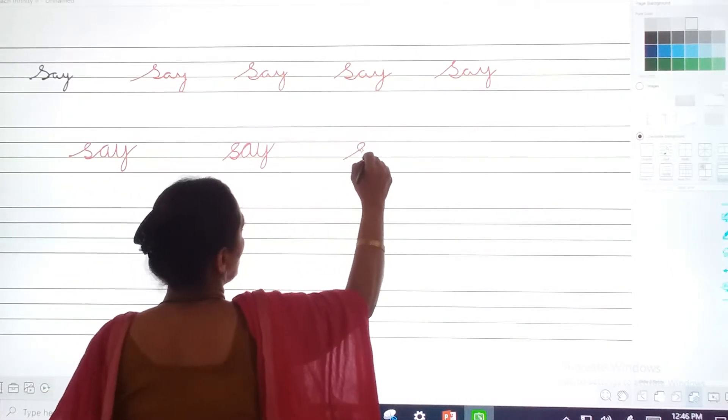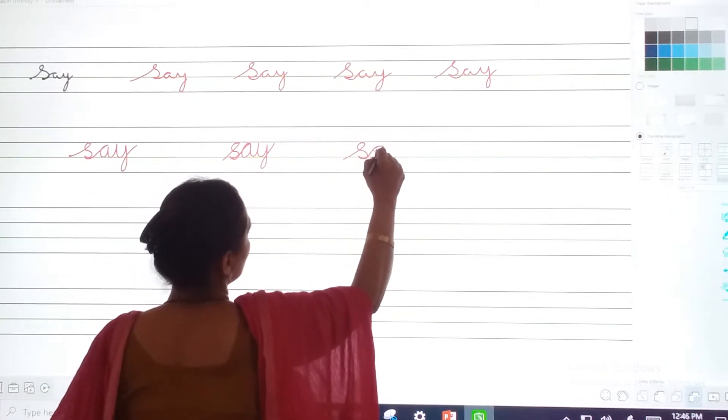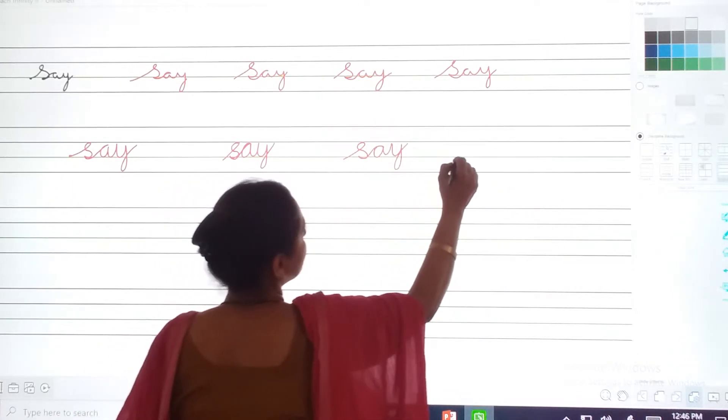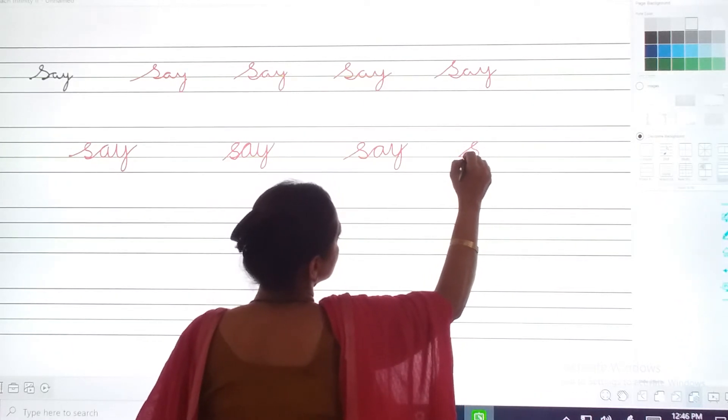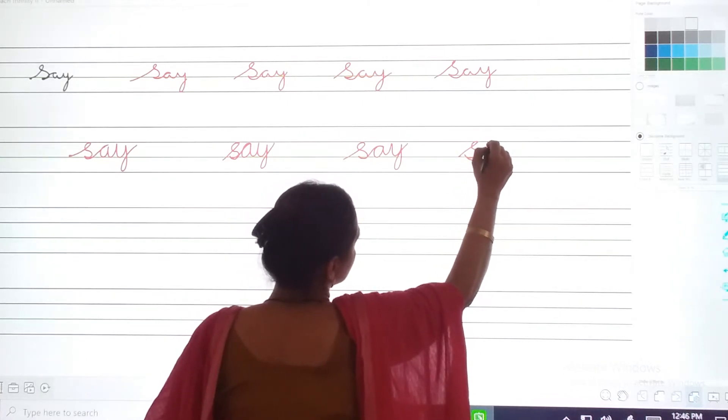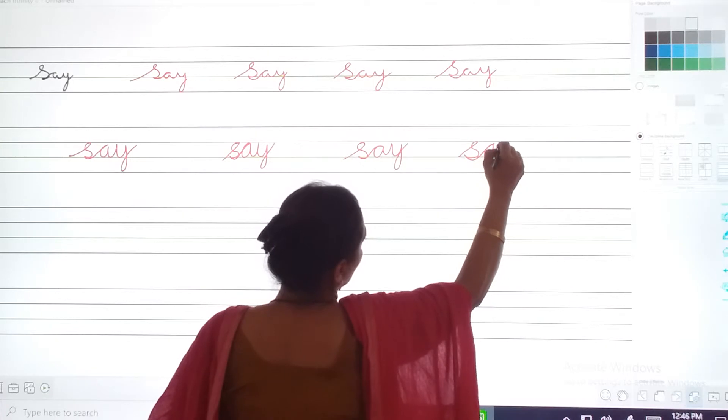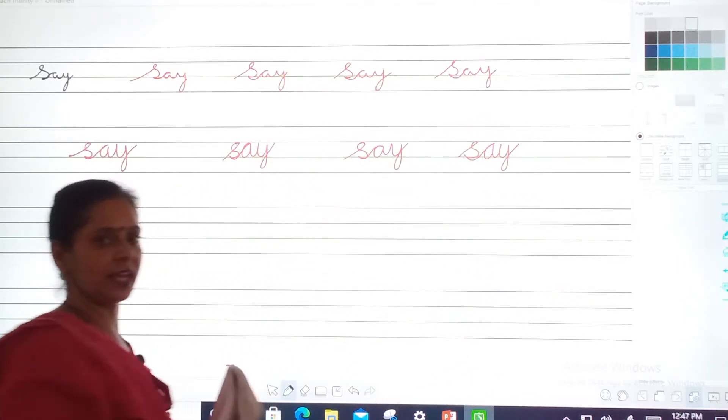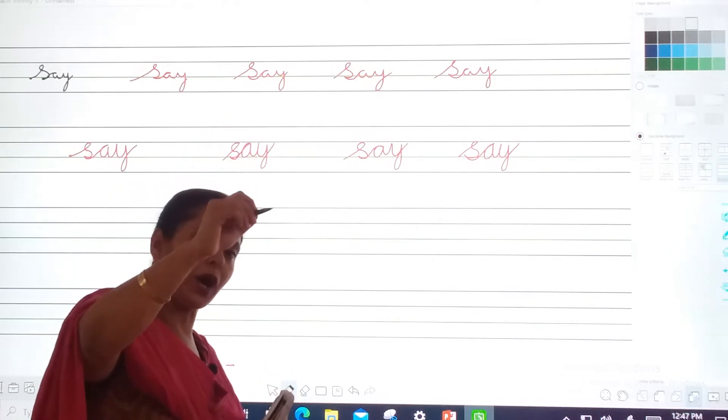S, A, Y. Say. Oopar tak leke jana hai? Chhodna nahi hai. S, A, Y. S, A, Y. S, A, Y. Say.